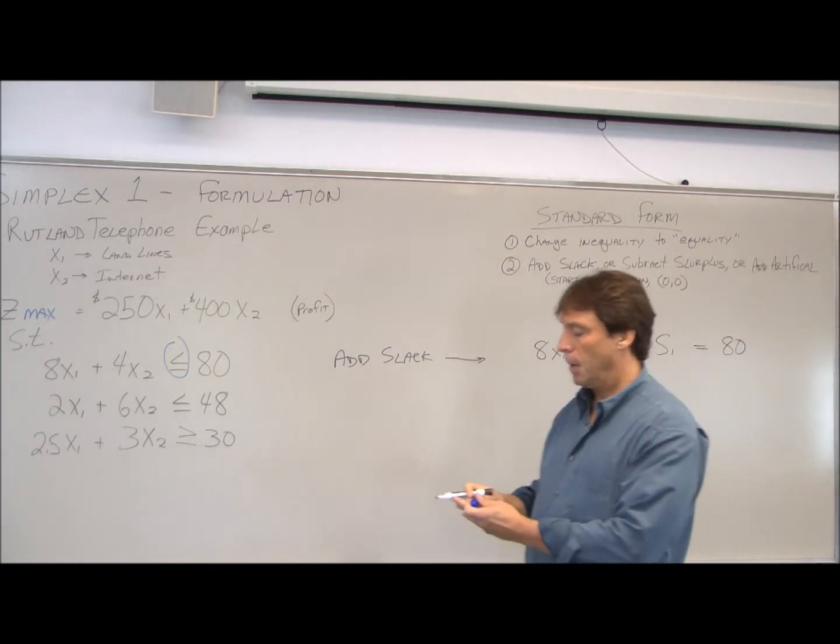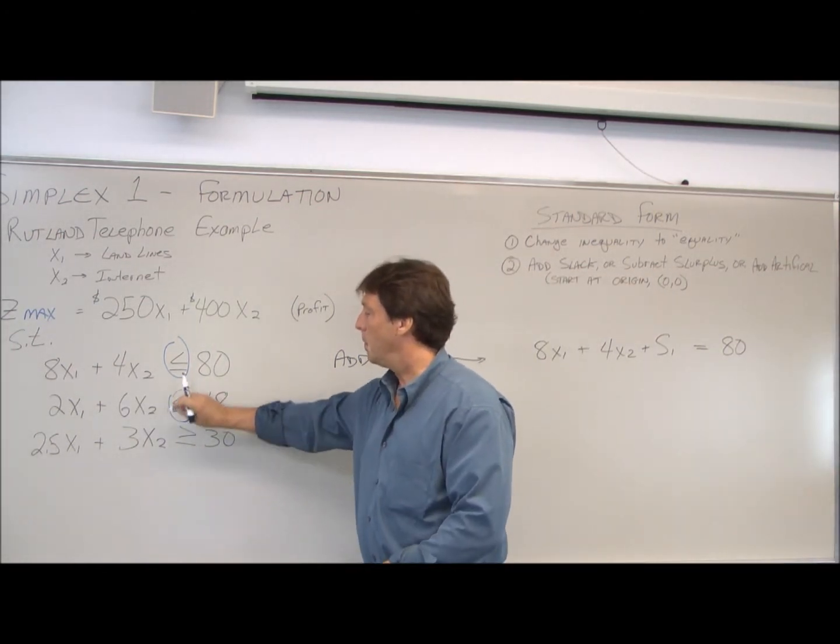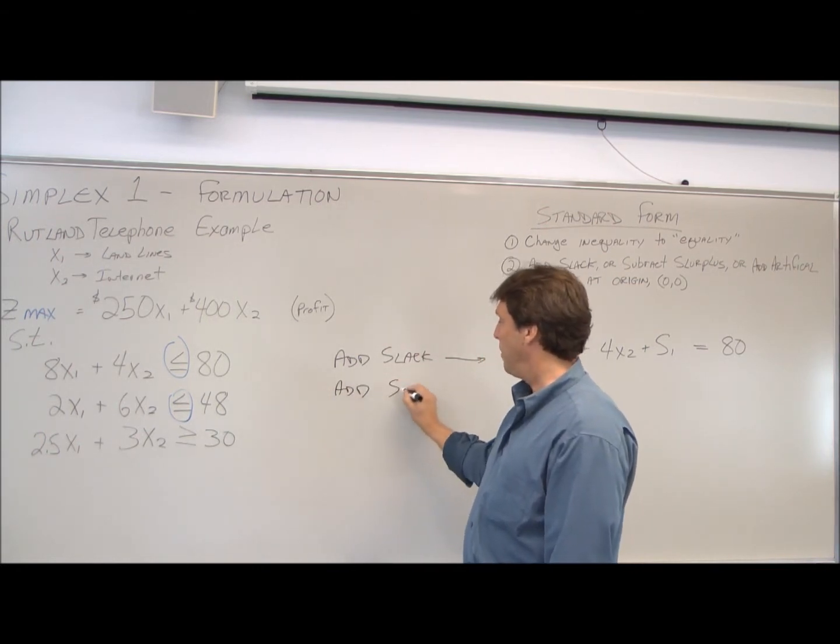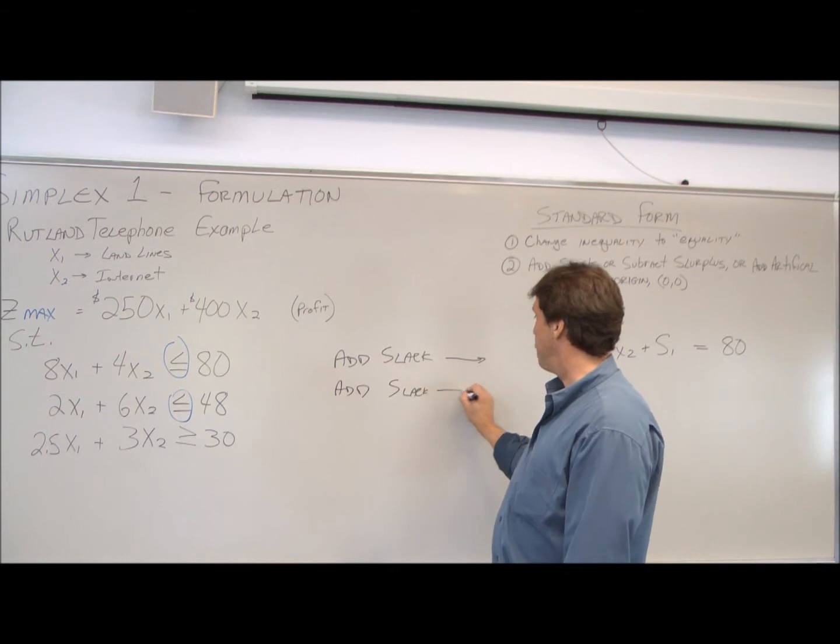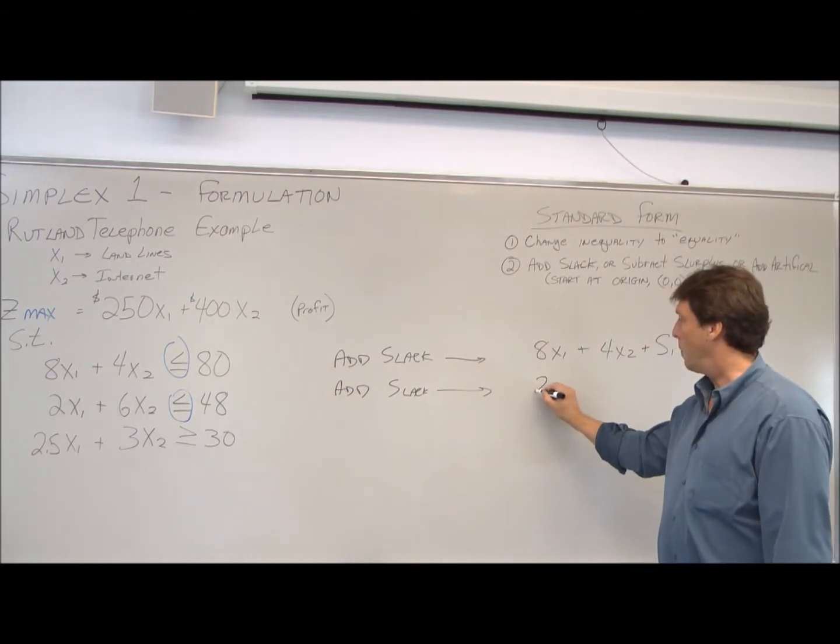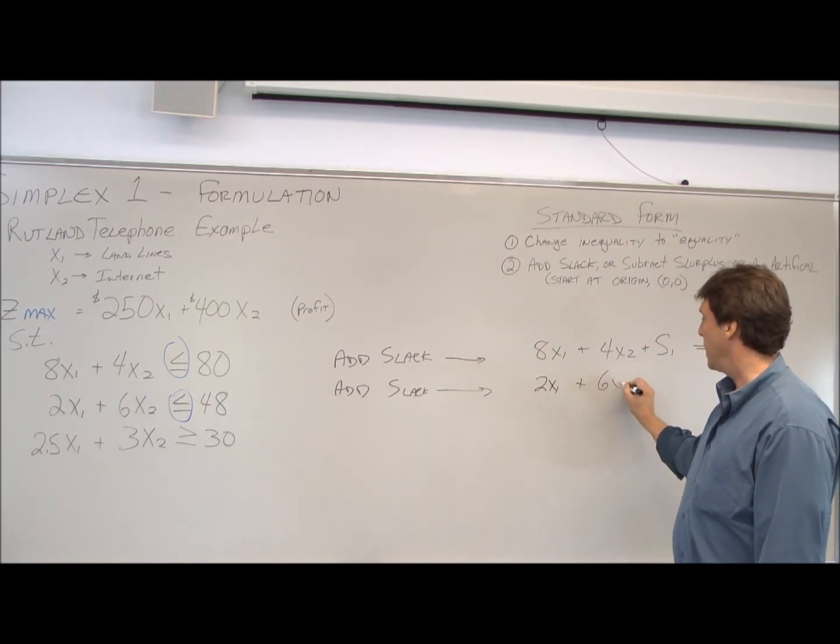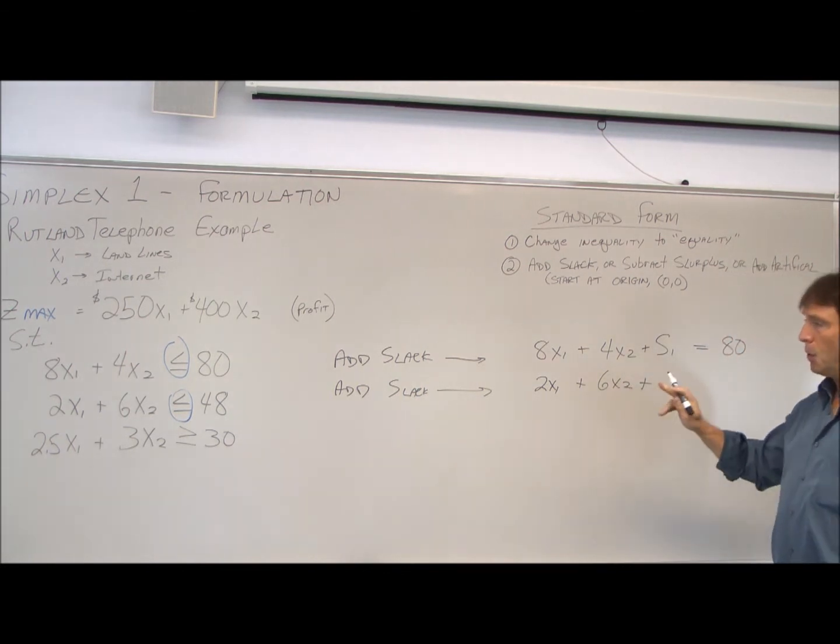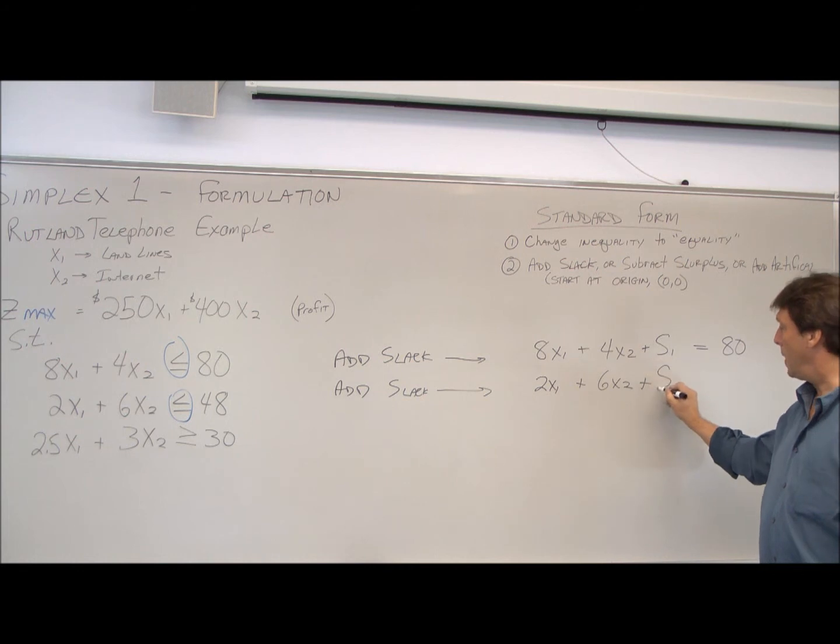Our second constraint is also a less than or equal to, so we add slack. This comes over to x1 plus 6x2. This time we're using a second constraint, so we add s2 slack, is equal to 48.